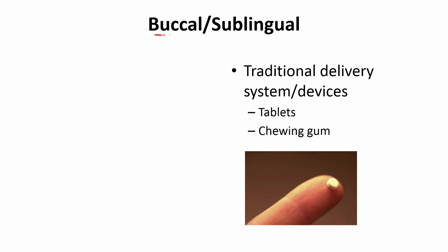That is all for inhalation; let us talk about another delivery format: buccal or sublingual delivery. This is a very traditional delivery method not used as much these days. What it involves is taking a tablet and keeping it under your tongue for a longer duration. That region — anything below your tongue, all that cheek region — is the buccal cavity. Chewing gum is a classic example where flavors are absorbed through the buccal cavity. These are typically tiny tablets because you cannot keep a big tablet in your mouth for very long.